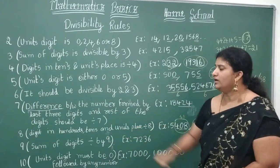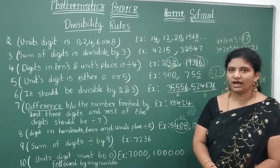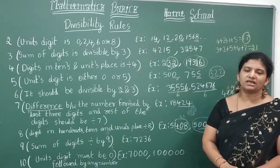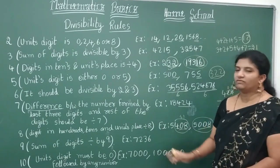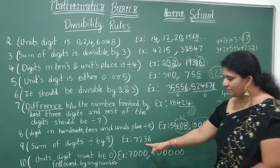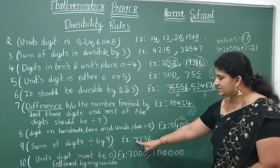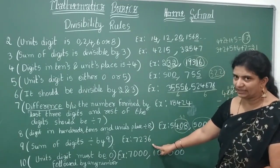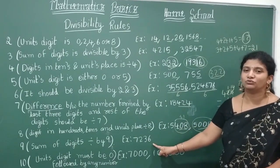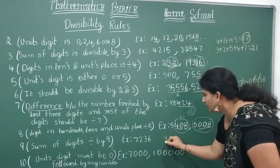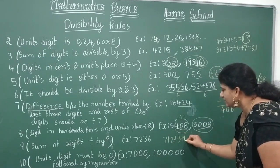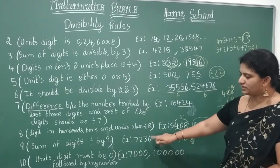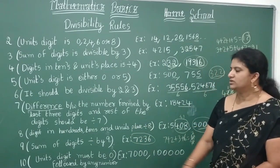Divisibility by 9: the sum of all digits must be divisible by 9 — similar to the rule for 3. For example, take the four-digit number 7236: 7 + 2 + 3 + 6 = 18. Is 18 divisible by 9? Yes — 9 × 2 = 18. Therefore, 7236 is divisible by 9.